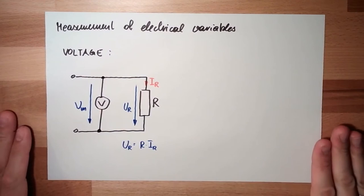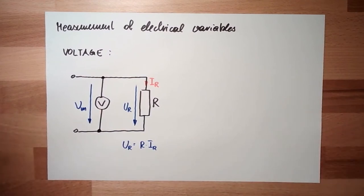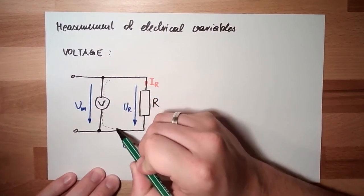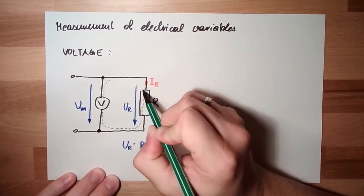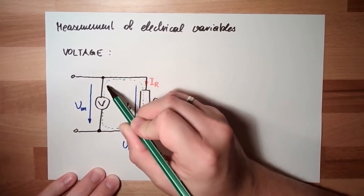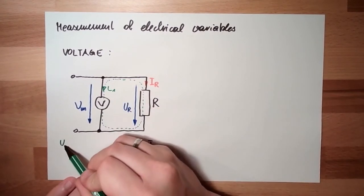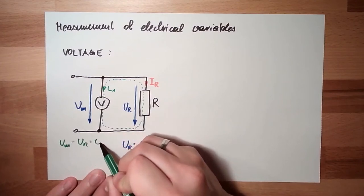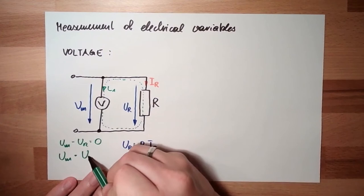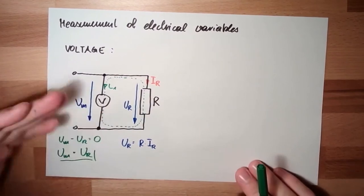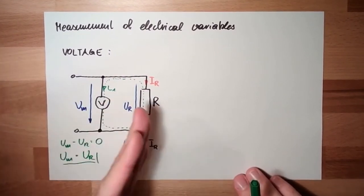And please remember from Elektrotechnik, Kirchhoff's laws. Mesh law, loop law, second rule. If this is the mesh, the loop, doesn't really matter in which direction. It means Um minus Ur is zero. This means the measured voltage is equal to the voltage here. That's the case in parallel. Every parallel thing do have the same voltage.